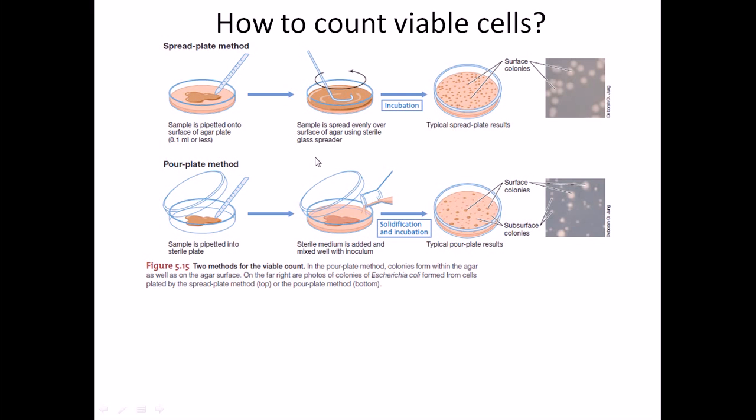is that in the spread plate method, as we are spreading the culture onto the top of the media, we can see the colonies only in the surface area. But on the other hand, for the pour plate method, we can see two different varieties of colonies: one in the surface which are more aerophilic, another one is subsurface which is slightly embedded onto the media due to this pouring effect. People may think